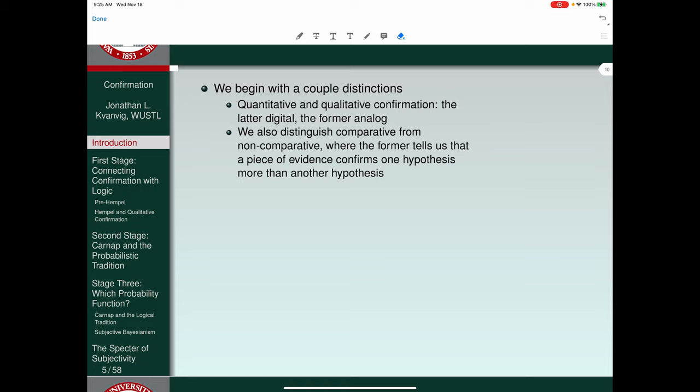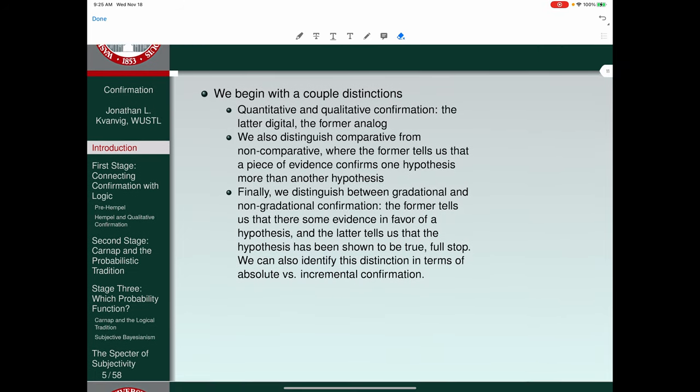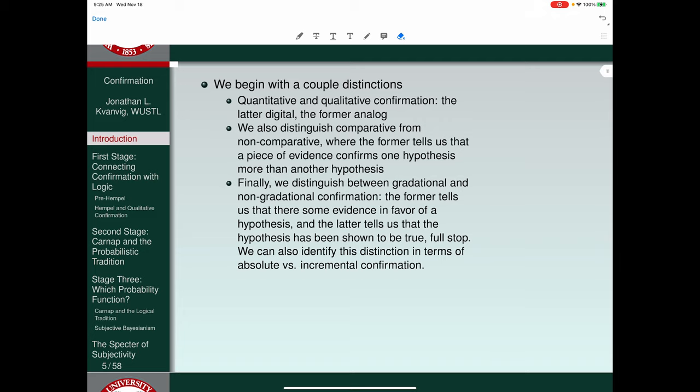If you have two pieces of information, both of which confirm a hypothesis, can we measure the degree to which one of those confirms it more than the other? For that we'd need a quantitative notion. Finally, we distinguish between gradational and non-gradational confirmation. The former tells us that there's some evidence in favor of a hypothesis. The latter tells us that the hypothesis has been shown to be true full stop. We can also identify this distinction in terms of absolute versus incremental confirmation.